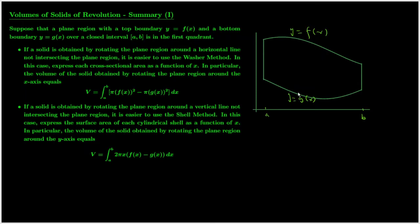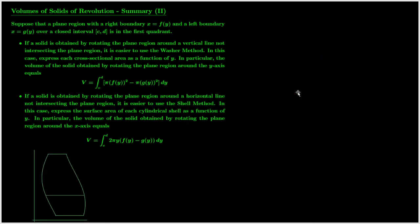I will show you why using some other cases on the next slide. Here you have a plane region with a right boundary and a left boundary. The right boundary is the graph of the equation x equals f of y, and the left boundary is x equals g of y. Both functions as functions of y are defined on the interval from c to d. We call a region like this a region with right and left boundaries over the interval from c to d.